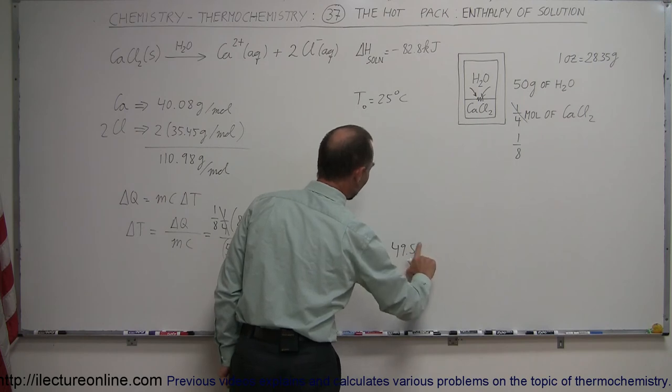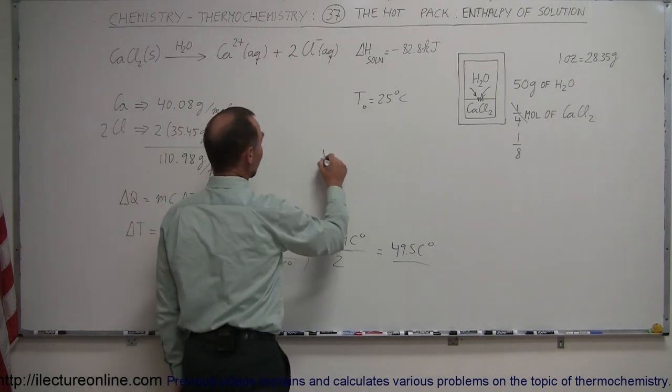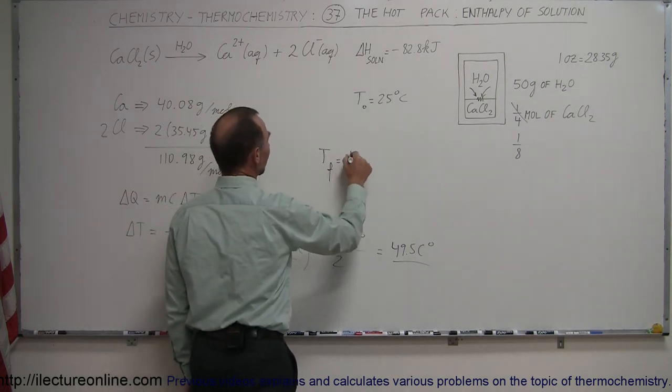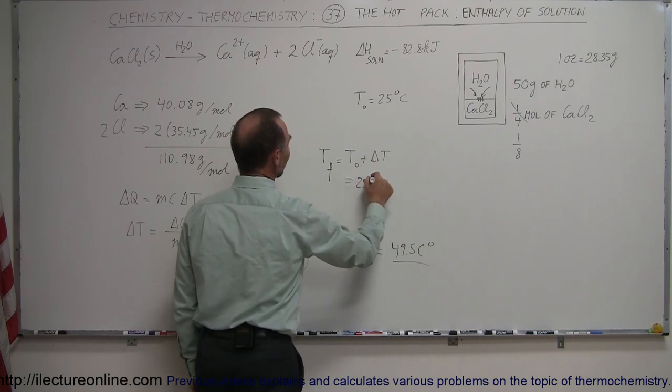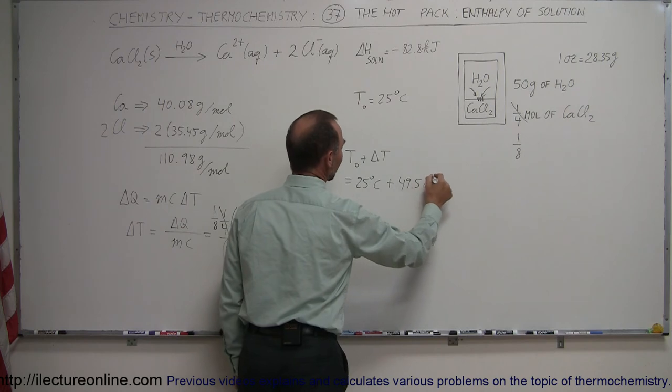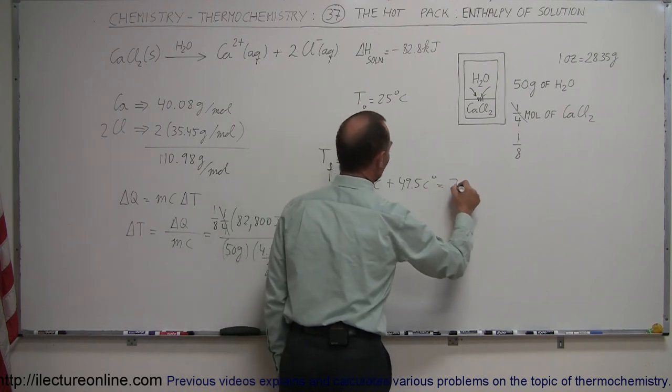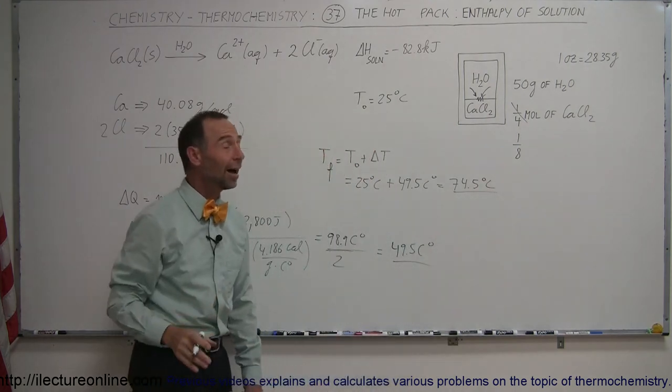If we add that to the 25 degrees centigrade, let's see what we get. T final would then be equal to T initial plus the change in the temperature. So we start at 25 degrees centigrade, add that 49.5 centigrade degrees, and that gives us 74.5 degrees centigrade, which of course would be very hot and you probably would not want to touch those with your bare hands.